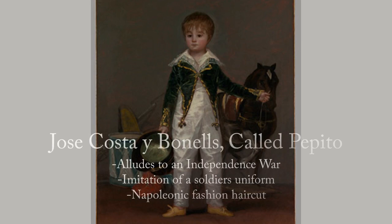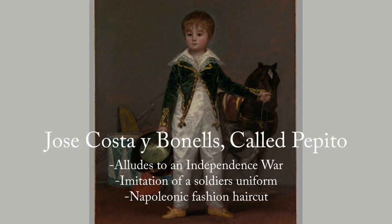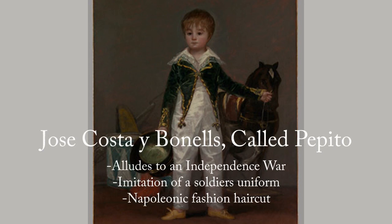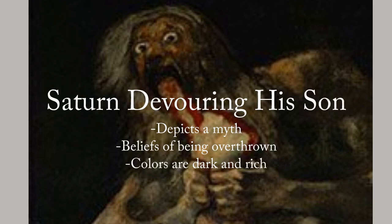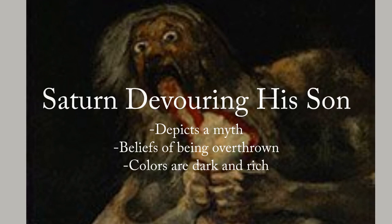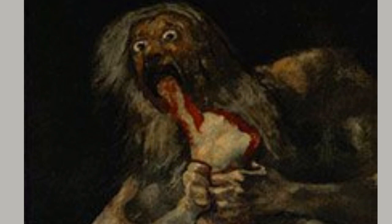The Jose Costa called Pepito artwork alludes to the Spanish War of Independence. The jacket that the boy is wearing is an imitation of the uniforms of soldiers in war. The boy also has a Napoleonic fashion haircut which allows it to represent the war times. The Saturn Devouring His Son piece depicts a Greek myth of a man who ate his son due to his fear of being overthrown by him. This piece also uses rich and dark colors. This shows Goya's interest in horrific and dark themes. This artwork is number 12 from Goya's series of 80 in the Caprichos.